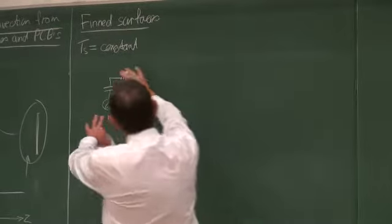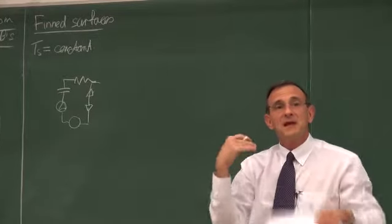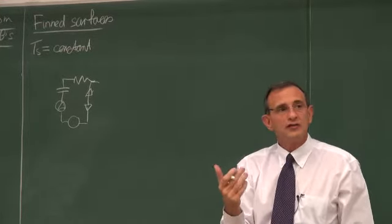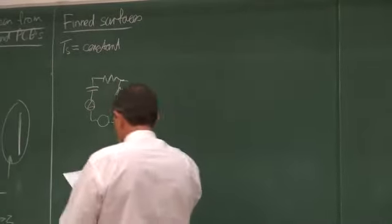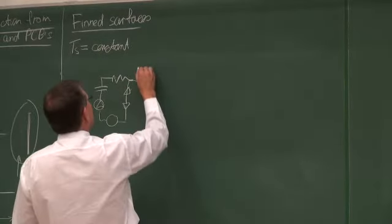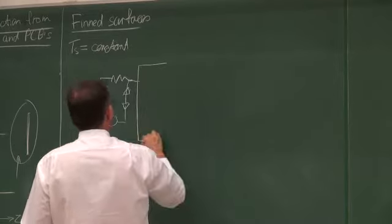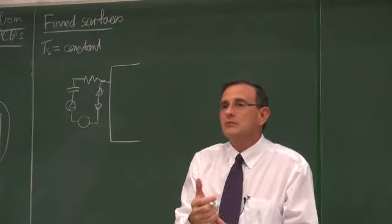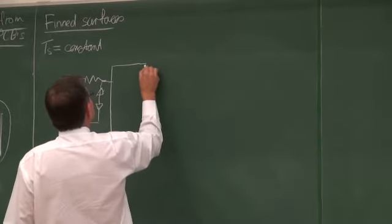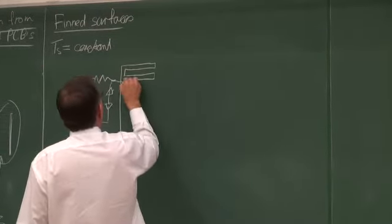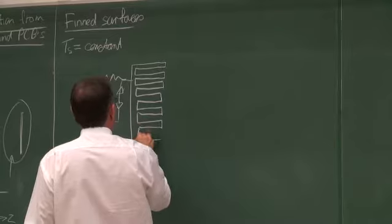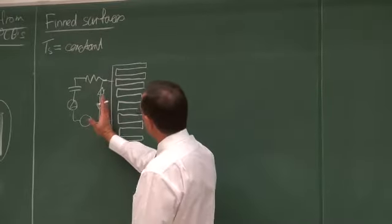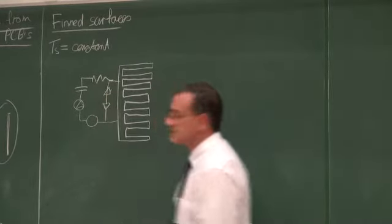We get all these electronic components together but they dissipate a lot of heat. How do we get rid of the heat? Usually they are installed on a heat sink. The heat sink is usually a metal — in most cases aluminium — with fins. There are the fins, and all these electronic components are installed on the back of this heat sink.